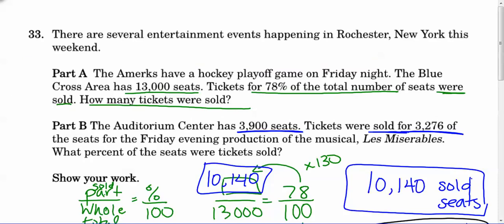So the first question that you had for this was a lot about percentages and it's talking about events happening in Rochester. And the first one is the Amherst, I'm not sure I have a hockey playoff game on Friday. The Blue Cross Arena has 13,000 seats. That's the total number of seats right there. That should have been underlined. And it says tickets for 78% of the total number of seats were sold. So they had a good turnout here. 78% of the seats are sold. How many tickets were sold? So we're going to convert this from a percent into a number of tickets. So ignore part B for right now.